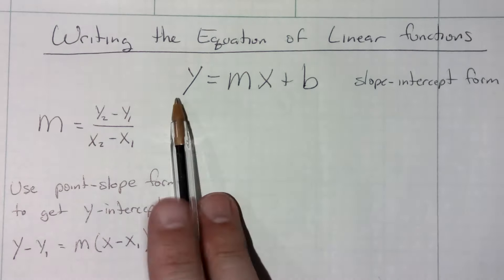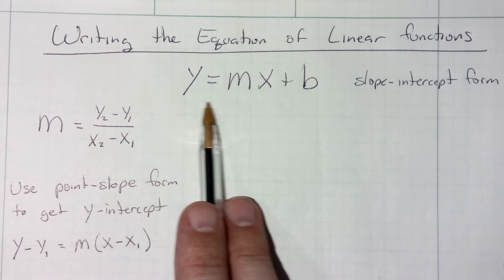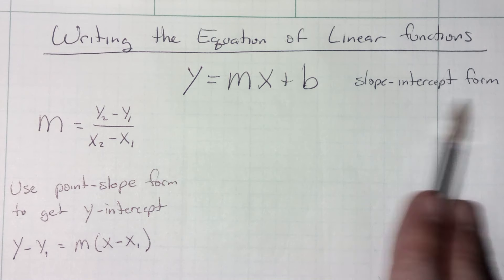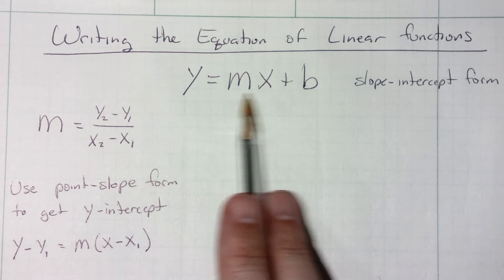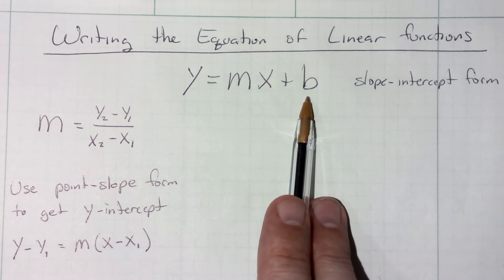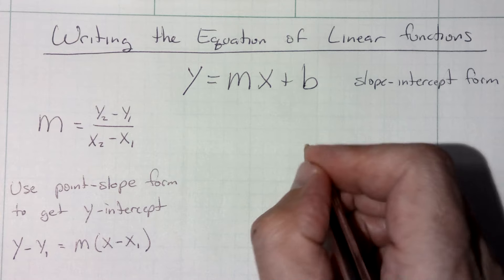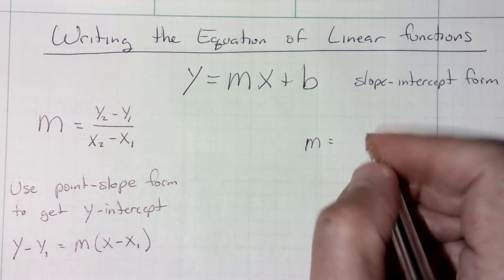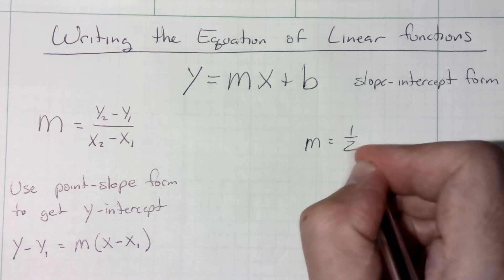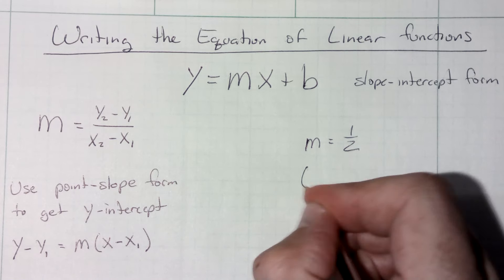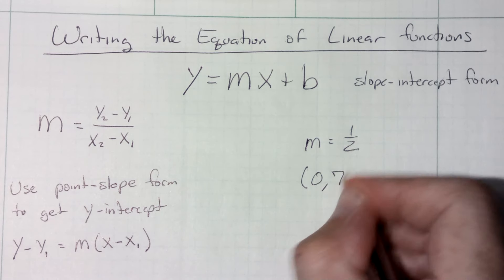For the most part, you're always going to be asked to write it in what's called slope-intercept form, where you need to know the slope and the y-intercept. Now, this would be very easy if they said, let's let the slope equal one-half, and let's say it goes through the y-intercept of 0, 7.